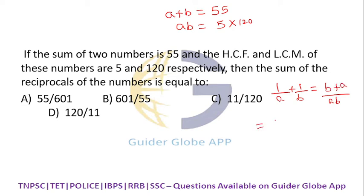What is b + a? That is 55. What is ab? 5 × 120 = 600. So we get 55/600 = 11/120. The answer is 11/120.